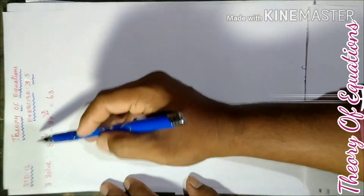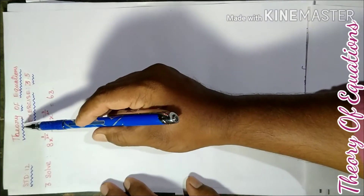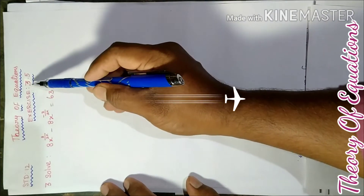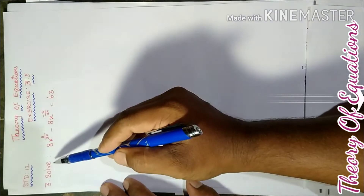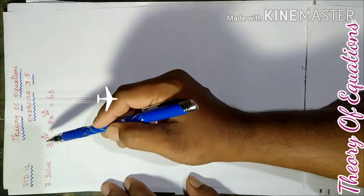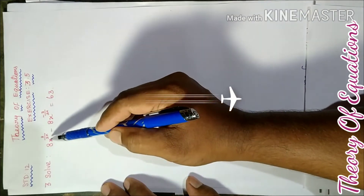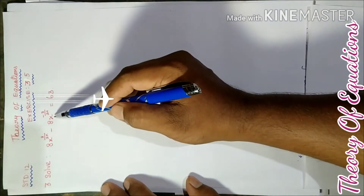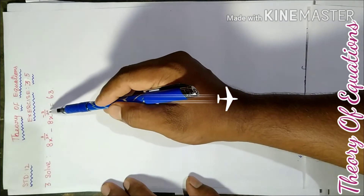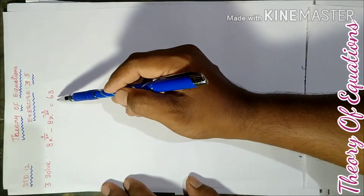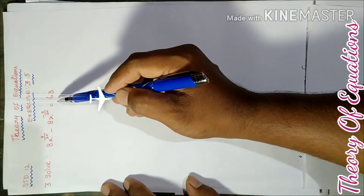Good morning students. Today we are 12th standard. Chapter name: Theory of Equations. Exercise 3.5, 3rd problem. Solve: 8x power 3 by 2n minus 8x power minus 3 by 2n equal to 63.